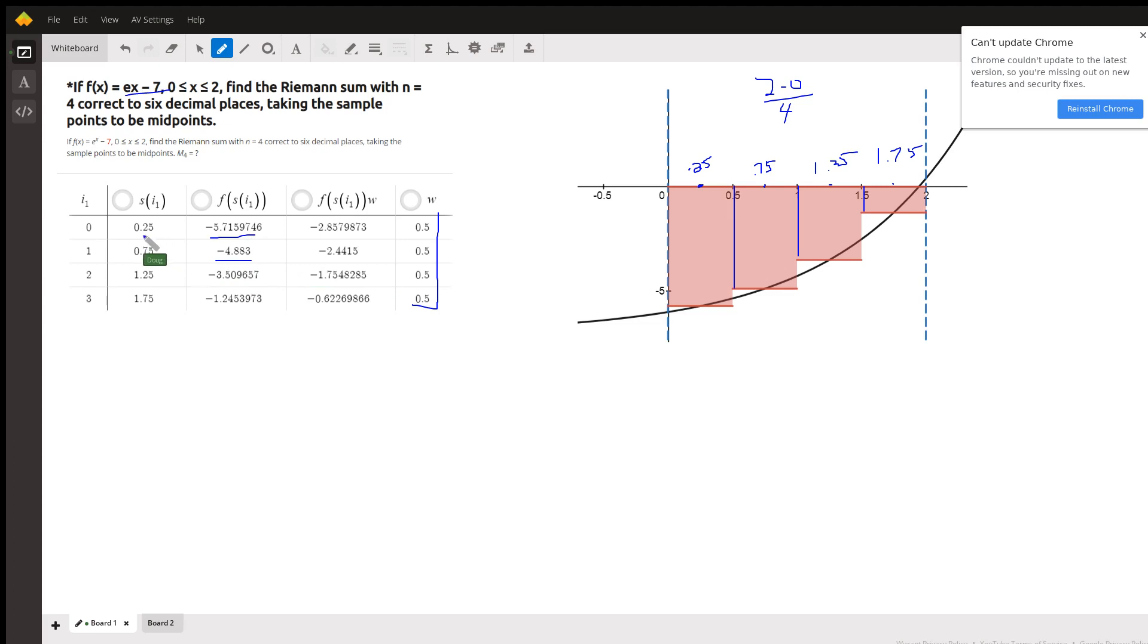So if you plug 0.25 into e to the x minus 7, that's what you get. And then if you take this height times this width, you get the area of the first rectangle.